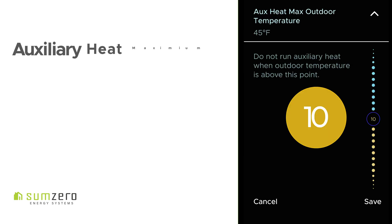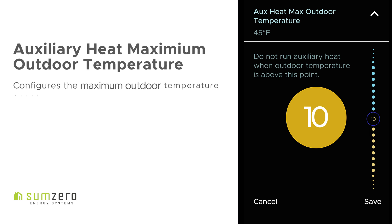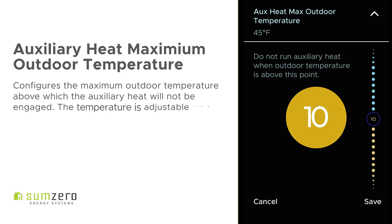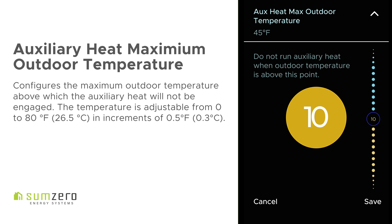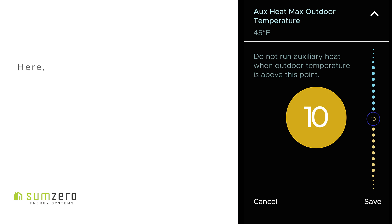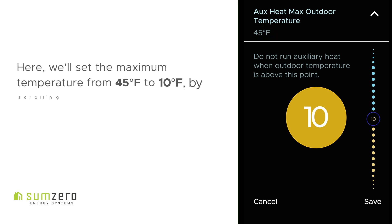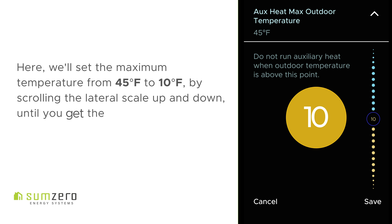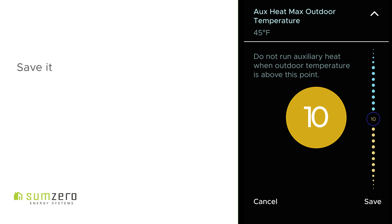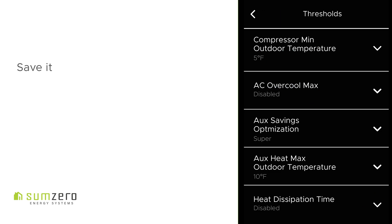Auxiliary Heat Maximum Outdoor Temperature configures the maximum outdoor temperature above which the auxiliary heat will not be engaged. The temperature is adjustable from 0 to 80 degrees Fahrenheit in increments of 0.5 degrees. Here, we'll set the maximum temperature from 45 to 10 degrees Fahrenheit, scrolling the lateral scale up and down until you get the desired temperature. Now, we'll save it. Done!